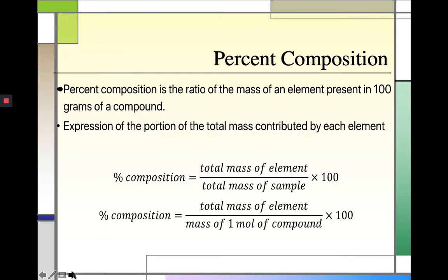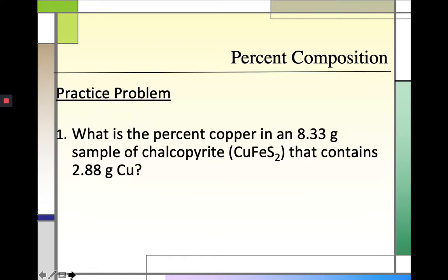Here are some additional definitions for percent composition. It's a ratio of the mass of an element present in a 100-gram sample of a compound, and an expression of the proportion of the total mass contributed by each element. You can use either the total mass of element over the total mass of sample times 100, or express it in terms of molar mass: the total mass of the element over the mass of one mole of compound.